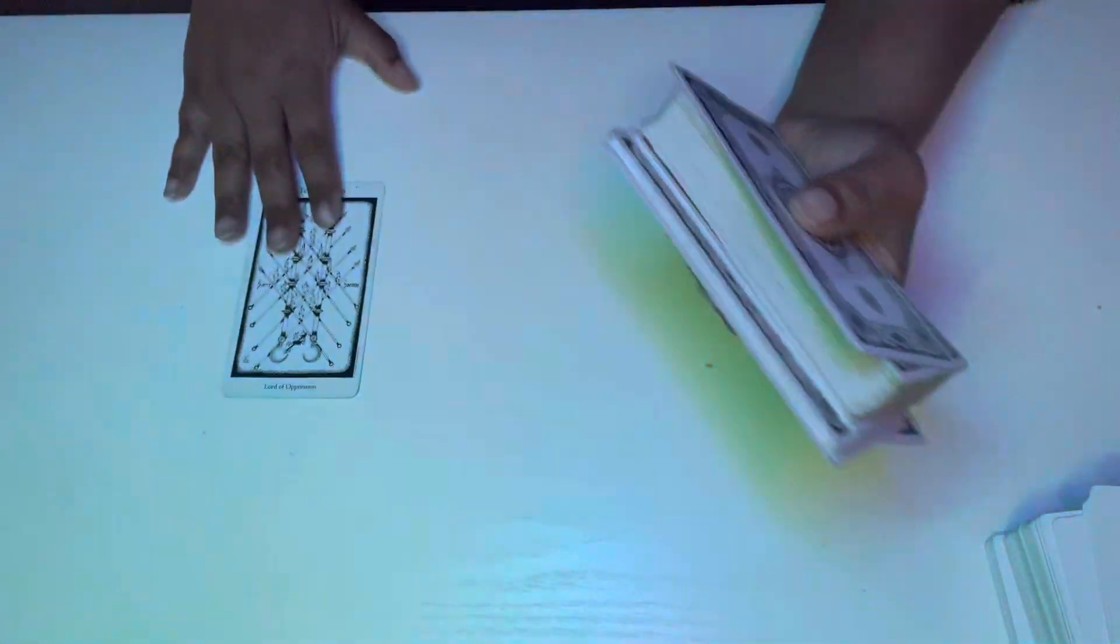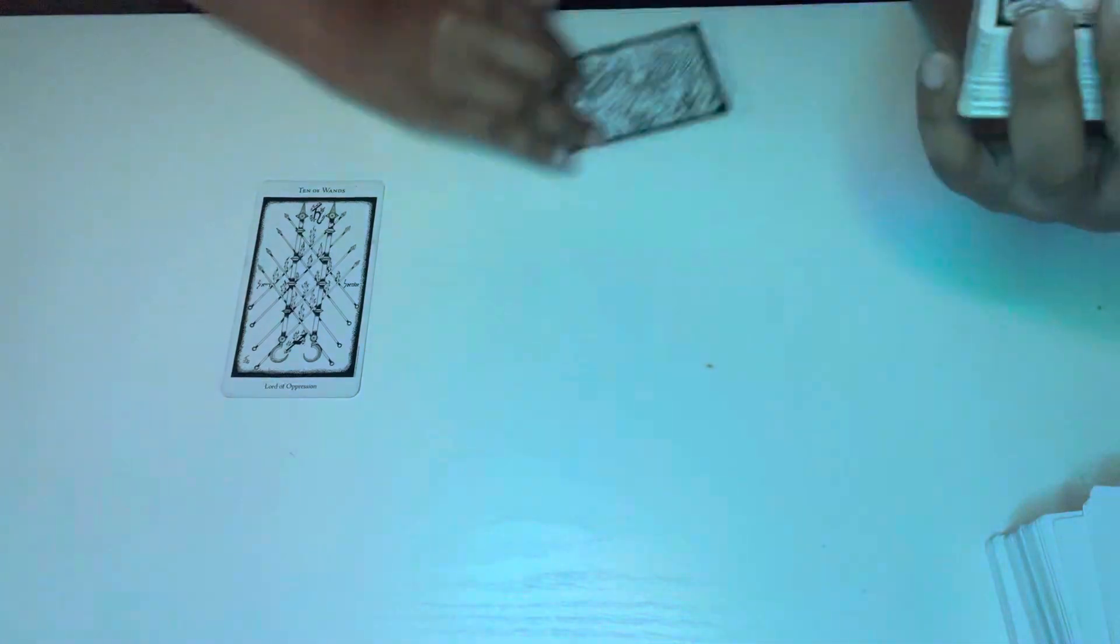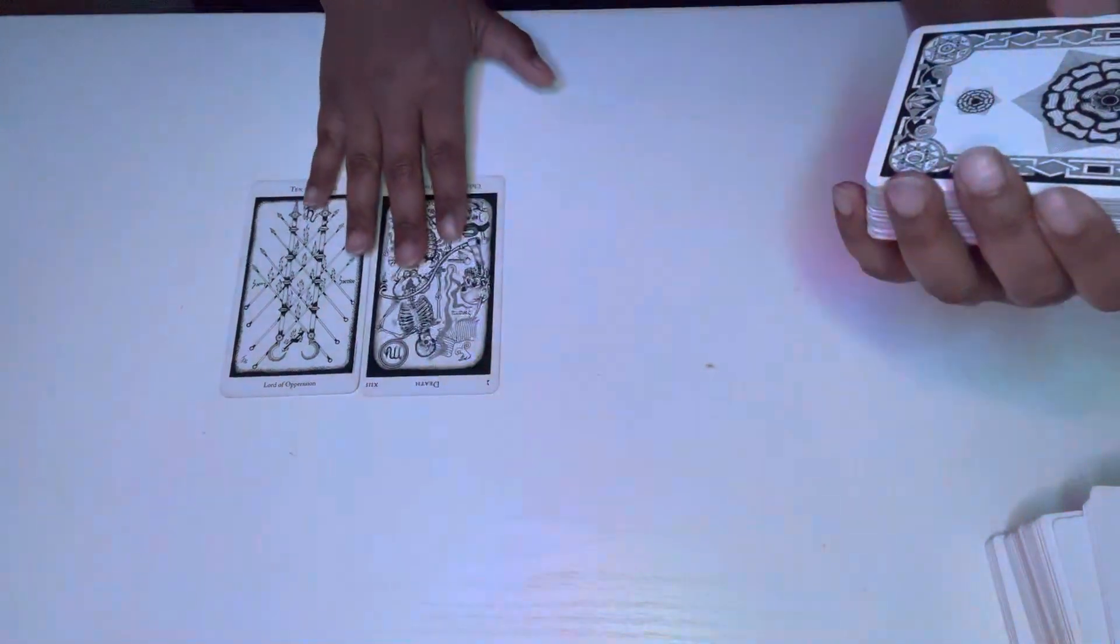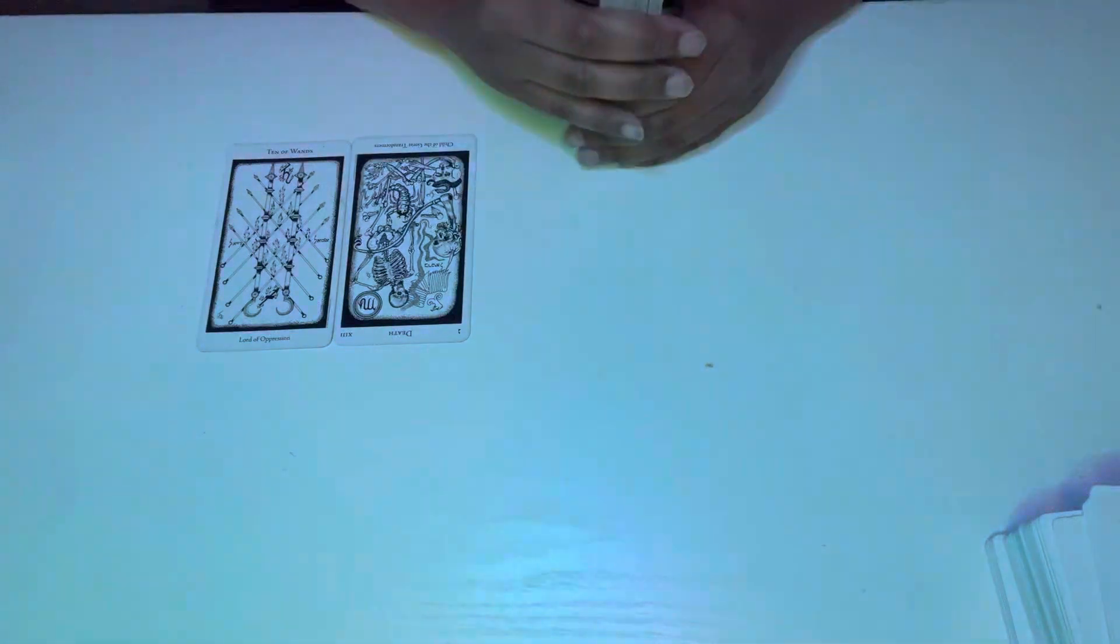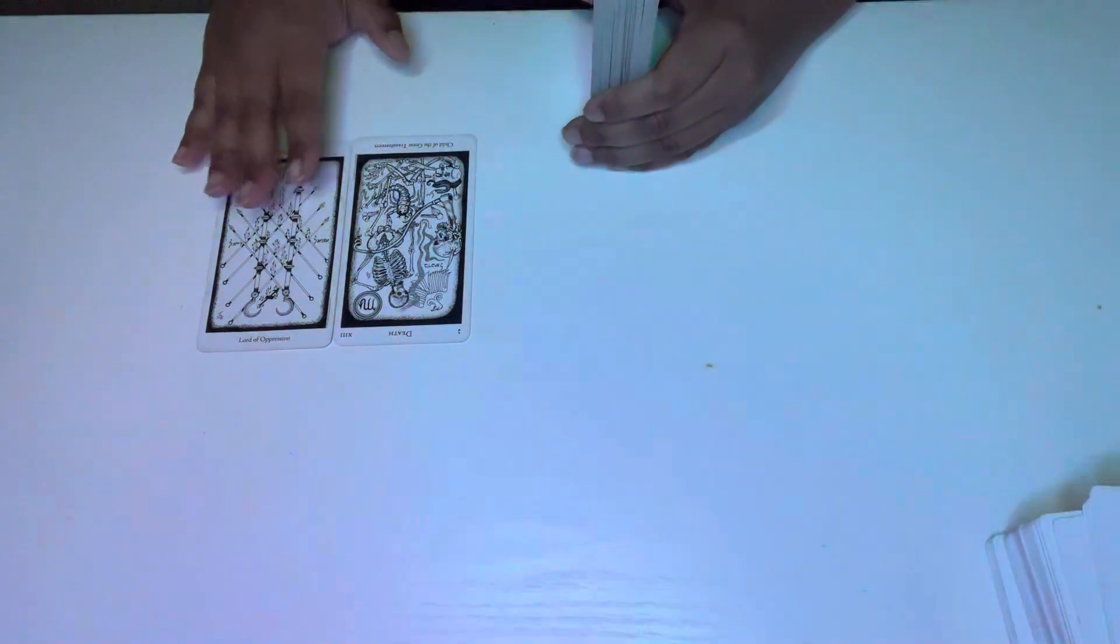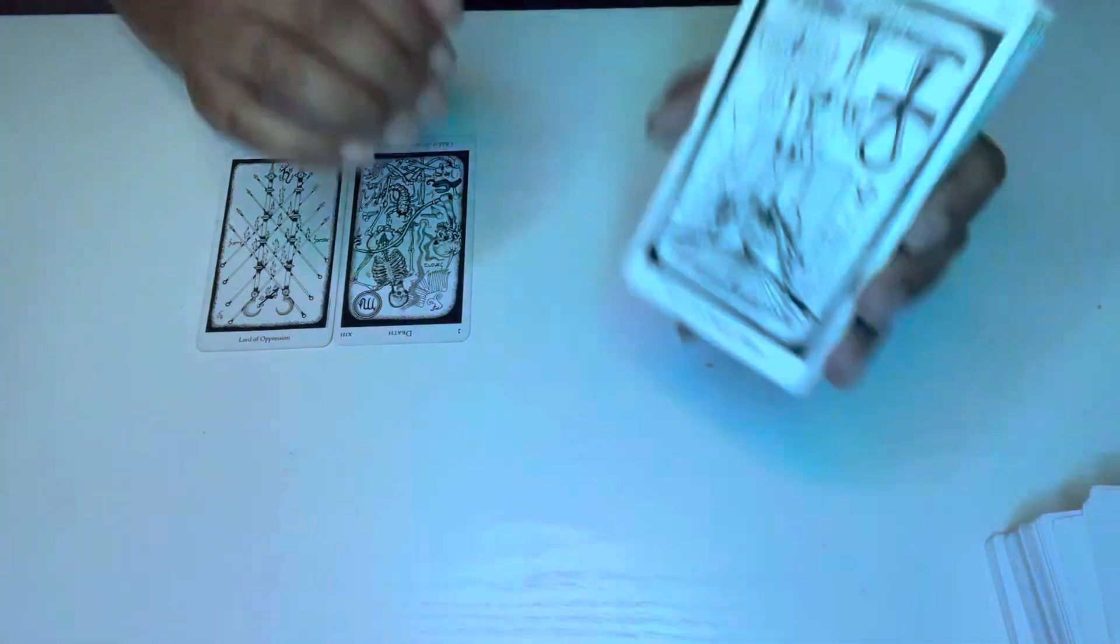First card out ten of wands. Something here is a burden somebody refuses to change. This could be a relationship this could be a job this could be any situation here. Somebody is not willing to change therefore it's creating a burden for someone. Somebody may also feel stuck to a situation.